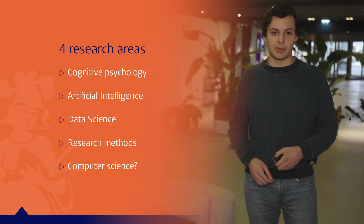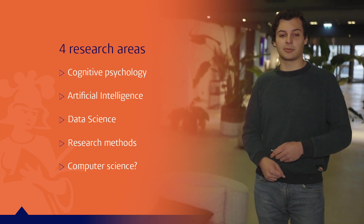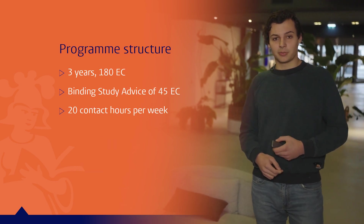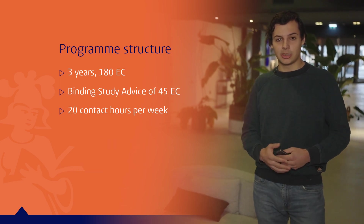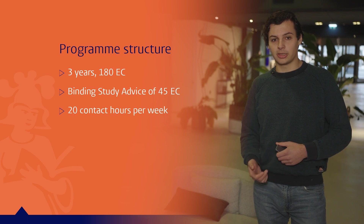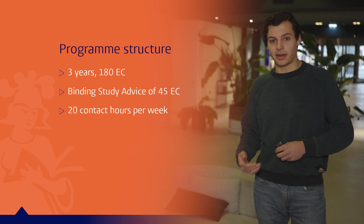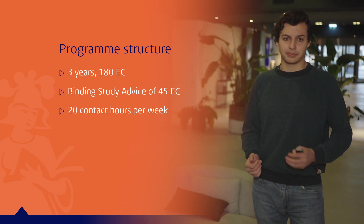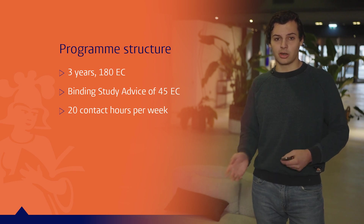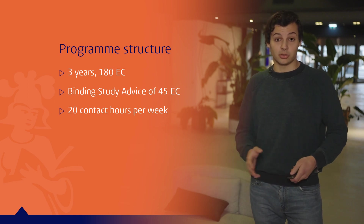For artificial intelligence it might be a bit more clear — neural networks are made with computer science techniques, and cognitive psychology also uses some computer science. This program consists of three years, each being 60 European credits, so in total 180 credits. In the first year and only in the first year you will have your binding study advice, which means you will need at least 45 European credits or you can't continue to study. On an average week you will have about 20 contact hours, although this could differ from the beginning to the end of the semester.